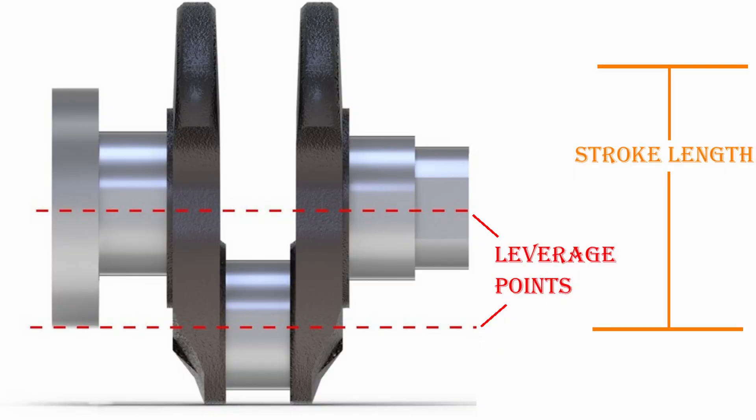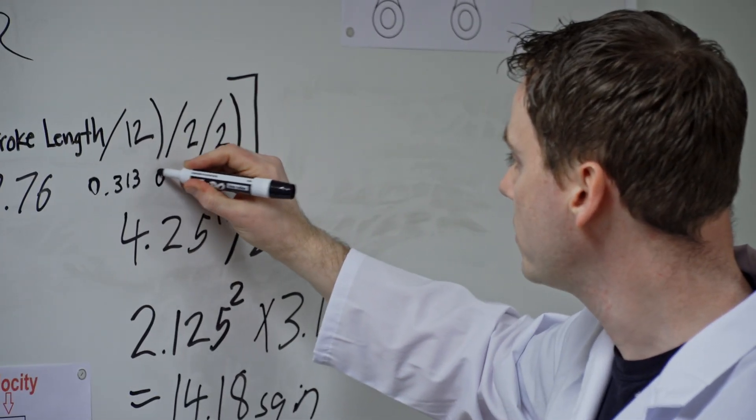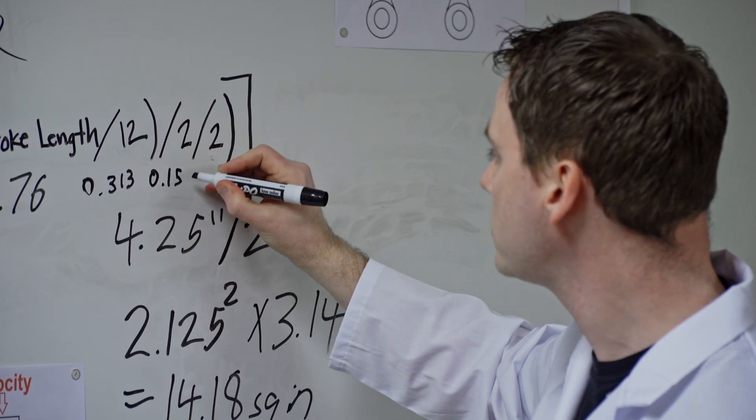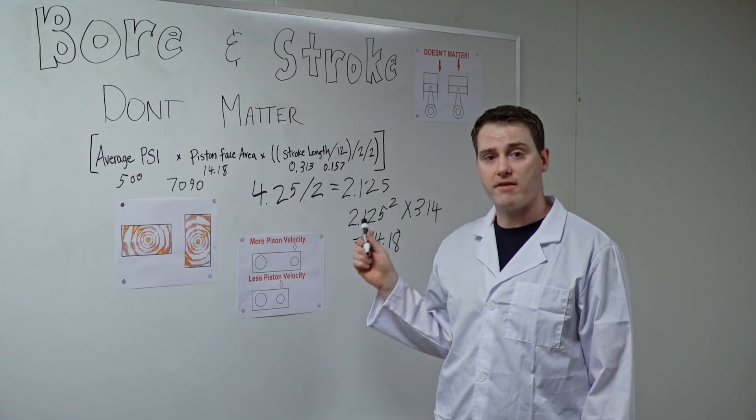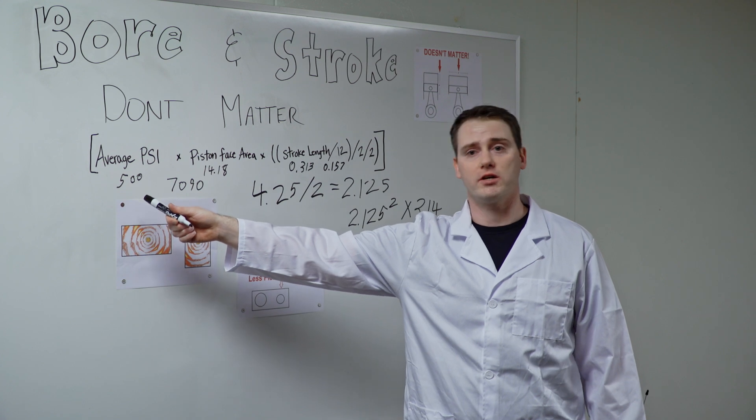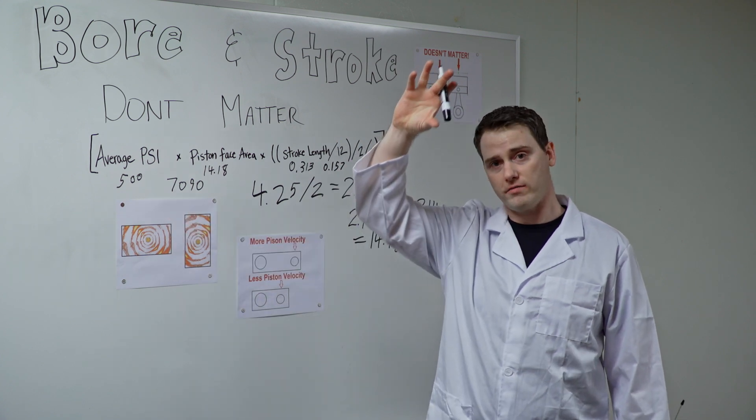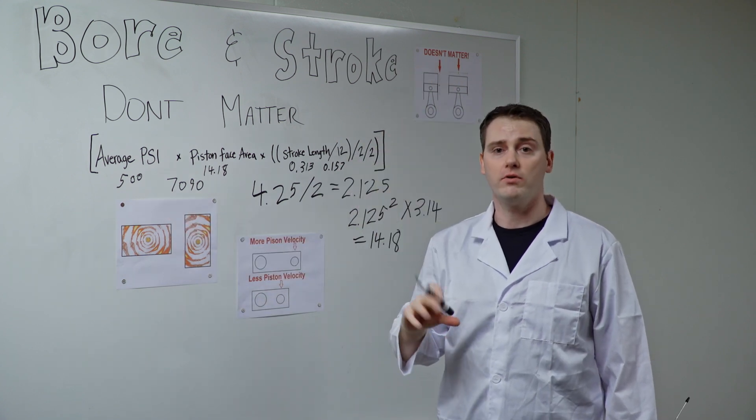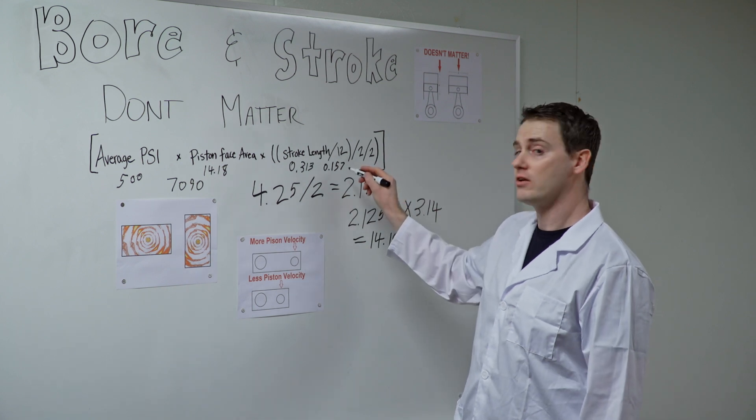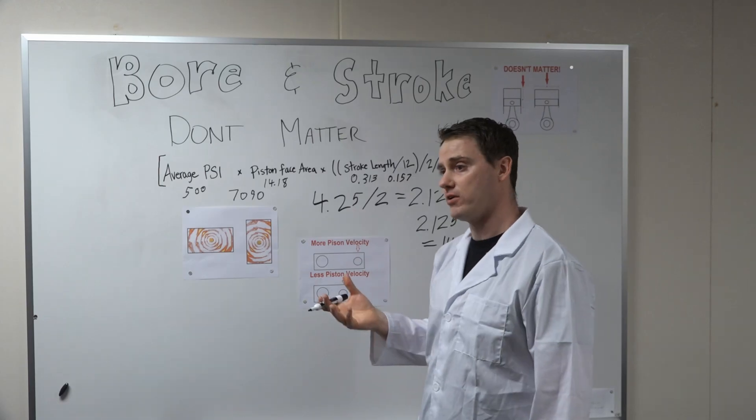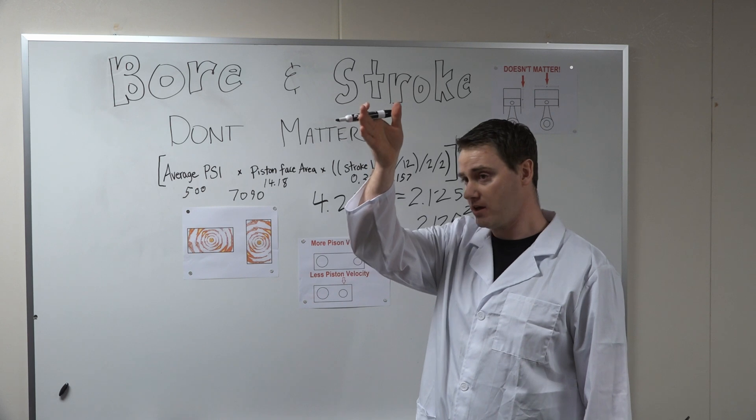Then we divide by 2 because we're not putting force on the entire stroke. We're only putting it on half the stroke from the center of the crank to the rod journal. So that equals 0.157. Then remember how we had to average the piston PSI because we weren't using all of that 1,000 PSI all the way through?